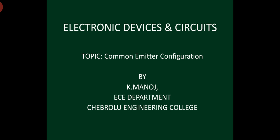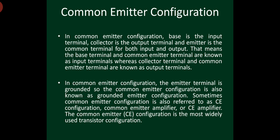In common emitter configuration, base is the input terminal, collector is the output terminal, and emitter is common for both input and output. The base terminal and common emitter terminal are known as input terminals, whereas the collector terminal and common emitter terminal are known as output terminals. The common emitter configuration is also called grounded emitter configuration.